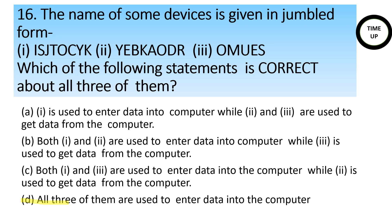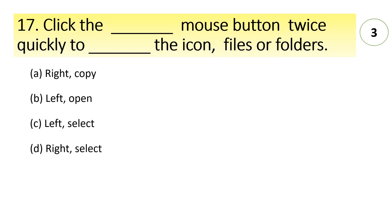So first let's check out the answers. First is joystick J-O-Y-S-T-I-C-K joystick, second is keyboard and third is mouse. So here since all three are input devices and all three are used to enter the data into the computer, so option D is the correct option. Click the dash mouse button twice and quickly dash to the icon files and folders. So here the answer is click the left mouse button twice to quickly open the icon files and folders.